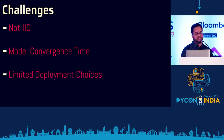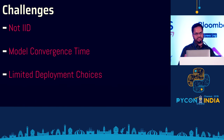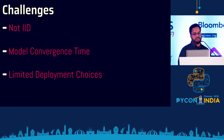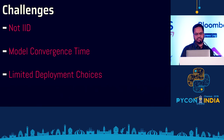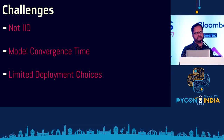All said and done, federated learning has its own set of challenges. Three main ones: First, data is not identically and independently distributed, which is a major challenge for statistics. Second, when you have centralized data, convergence happens faster because you have access to a lot of data — doing it piecewise across multiple devices means convergence can take weeks. Third, while there's been significant progress in deployment on edge devices, it's still in its infancy — most complex models don't work and you need very simple models, so deployment remains a big challenge.